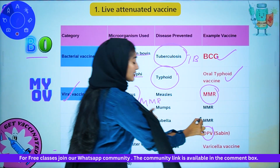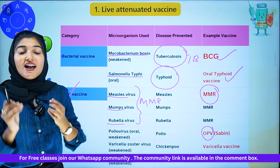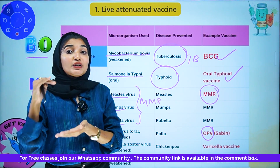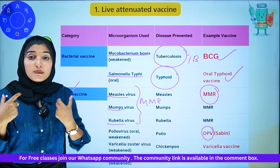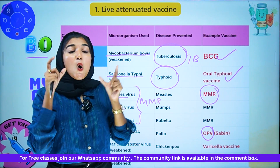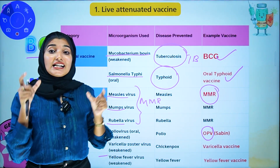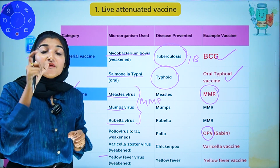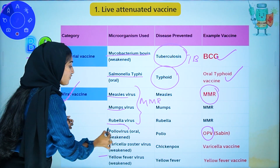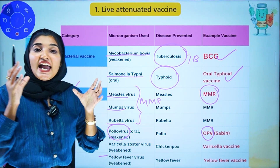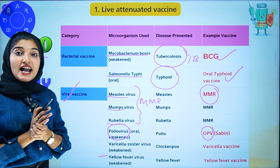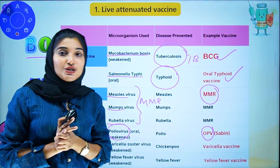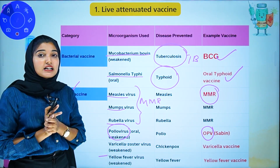What is the oral polio vaccine? It's a viral live attenuated vaccine available for use. The virus is the poliovirus and the disease it protects against is polio disease. We use the oral polio vaccine for polio disease.